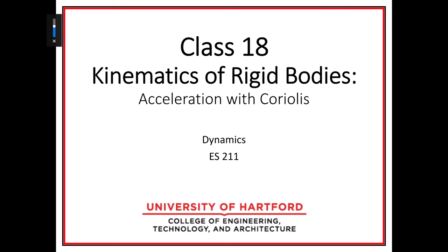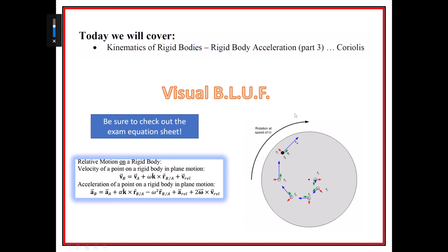We do refer to it in particle kinematics when dealing with polar coordinates. When dealing with polar coordinates, we've encountered Coriolis acceleration. The bottom line is two things need to be present: an angular velocity and a relative velocity. We've seen the 2R-dot theta-dot term before — that R-dot and theta-dot are the two ingredients needed to create an extra acceleration term.